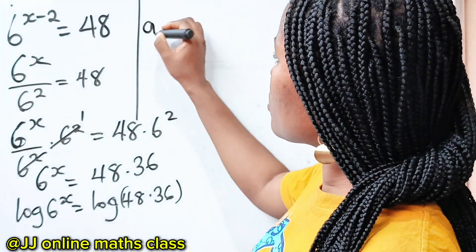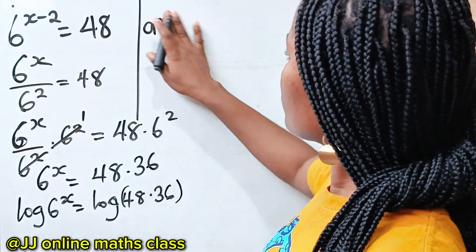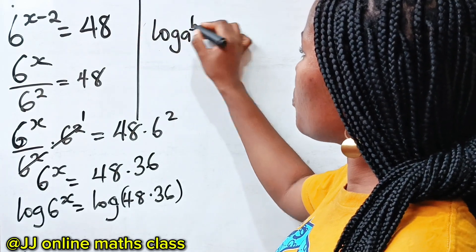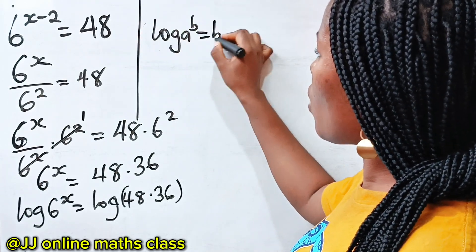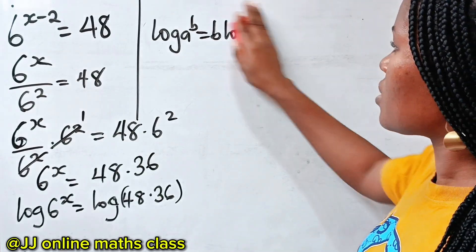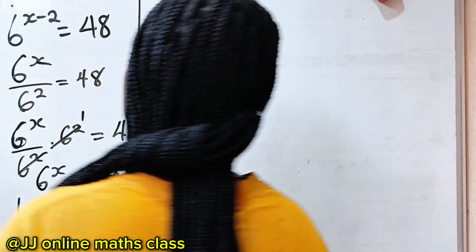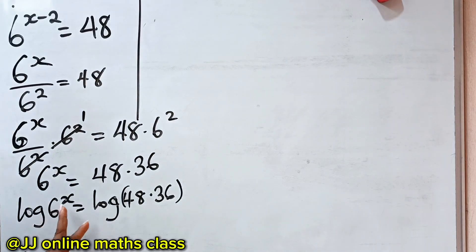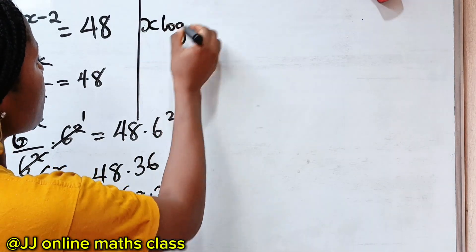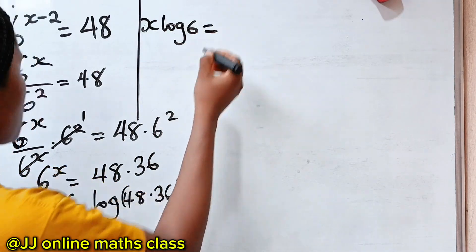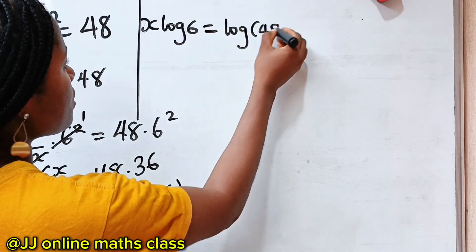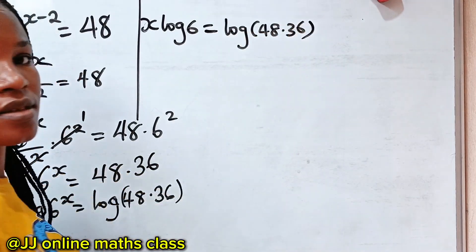Now, recall that log of a raised to the power of b is equal to b multiplied by log a. So that means we can write this as x·log 6 is equal to log of 48 multiplied by 36.